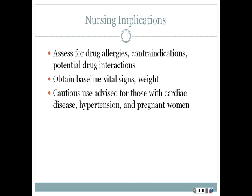For nursing implications, we always assess patients for drug allergies, contraindications, and potential drug interactions, so obtaining a thorough history and medication list is important. We want to obtain baseline vitals and weight for comparative purposes and closely monitor hormone levels, as this is a delicate balance. When gathering a history, note any cardiac disease, as some adverse effects are cardiac irregularities which can be life-threatening. Use of these medications during pregnancy is somewhat controversial, and treatment will vary depending on the physician.